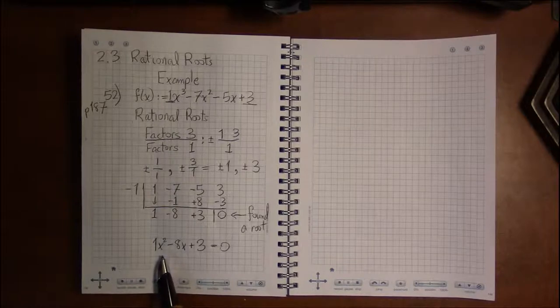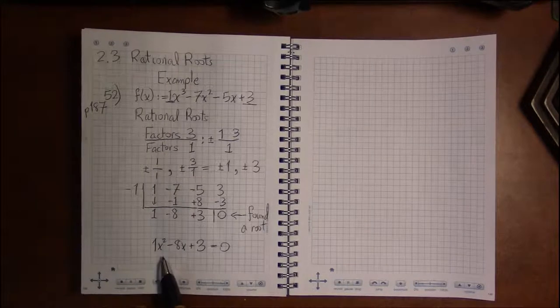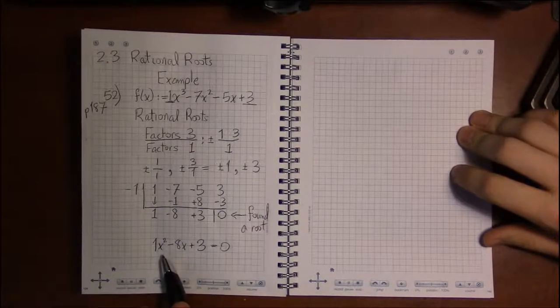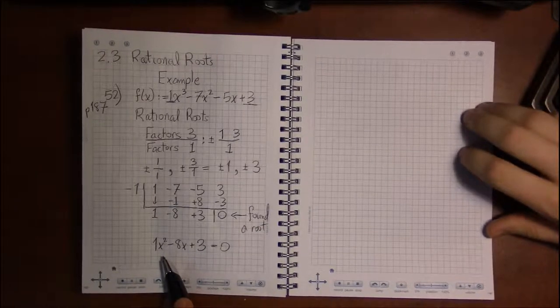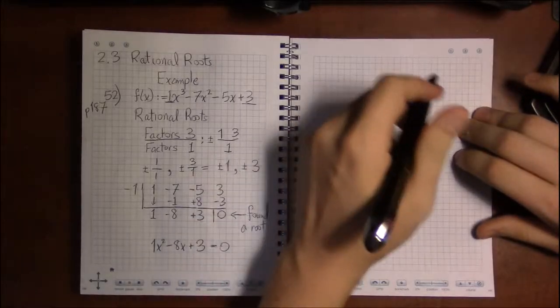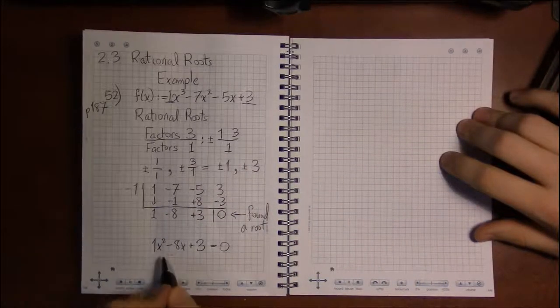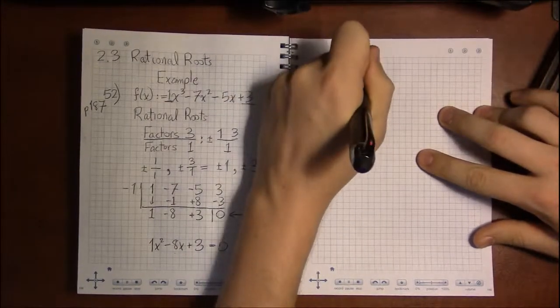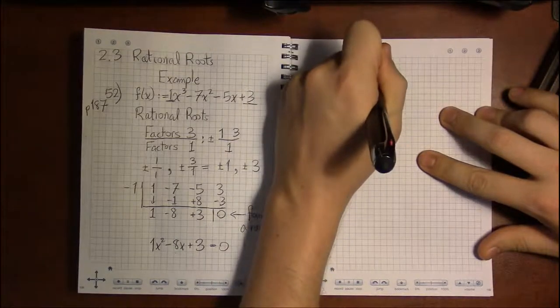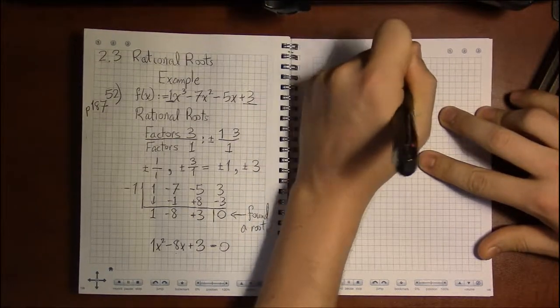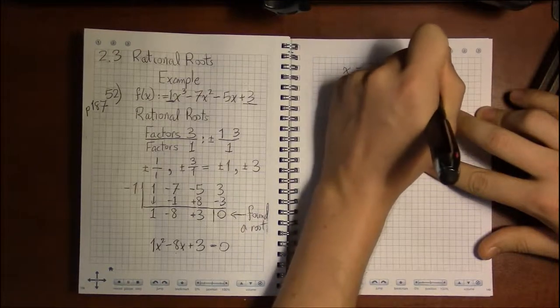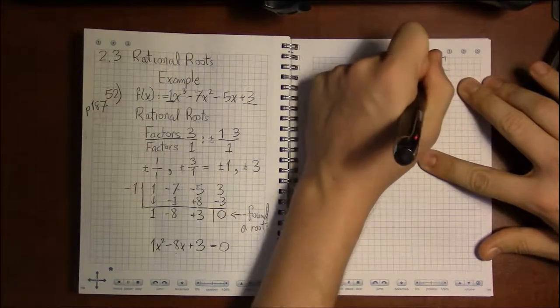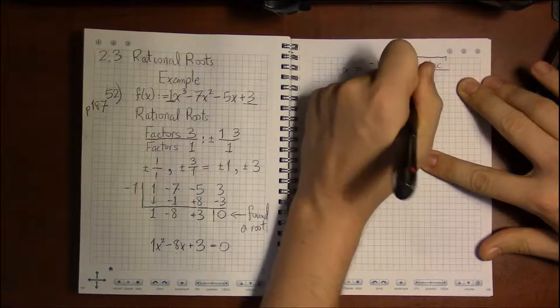In this case, solving this quadratic, I don't think this is going to factor. So, you're either going to have to complete the square, or you're going to have to use the quadratic formula, which is going to be my plan of action. Our a is 1, b is minus 8, and c is 3. Writing down the formula, we have that our final two roots are going to be minus b plus or minus square root b squared minus 4ac. And all of that is going to be put over 2a.